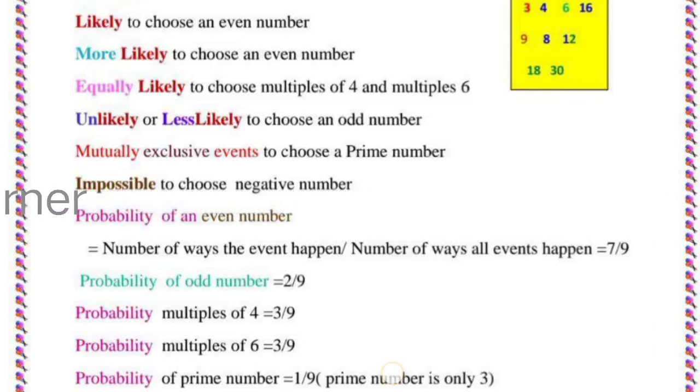Then probability of multiples of 4: how many multiples? 4, 8, 12—so 3/9. Then probability of multiples of 6: again 3/9.